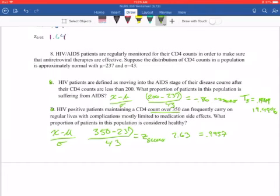But on this one we want a count over 350. So in order to find over this point, we want to find the area to the right, the area associated to the right on the curve.